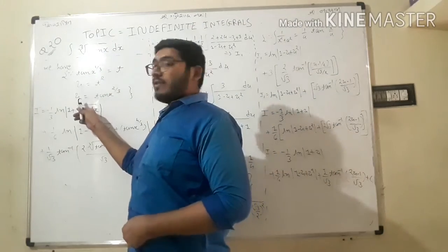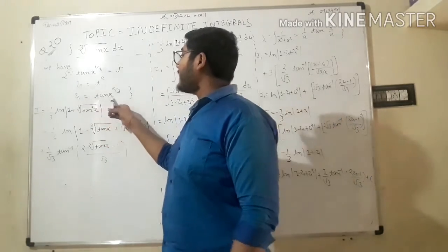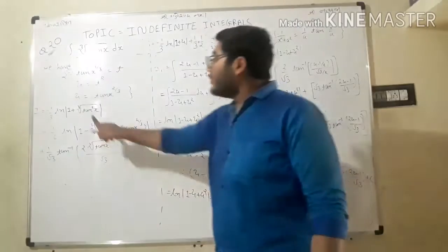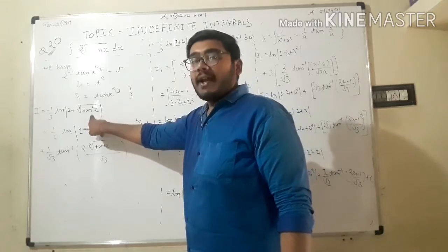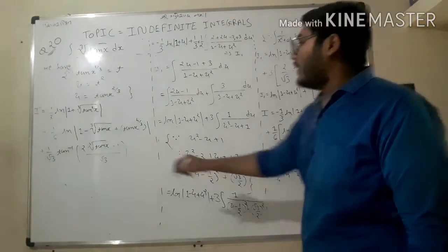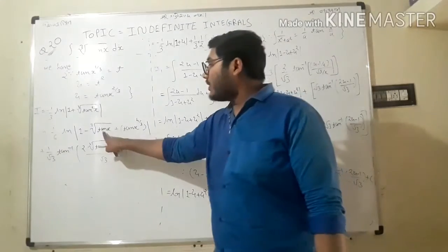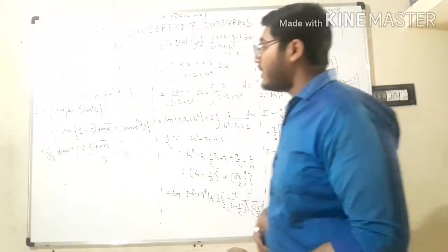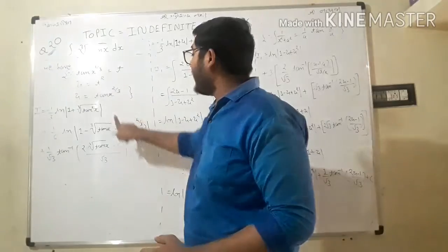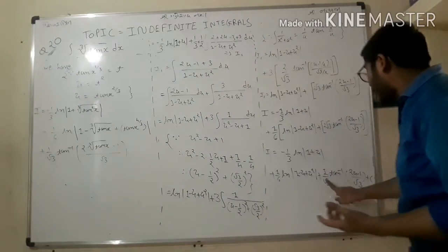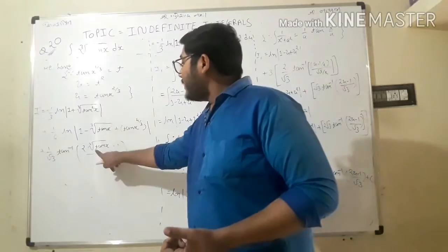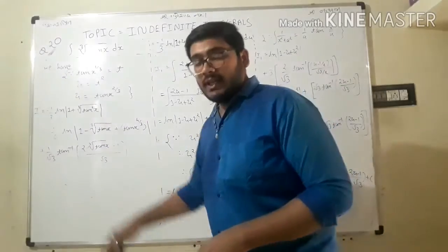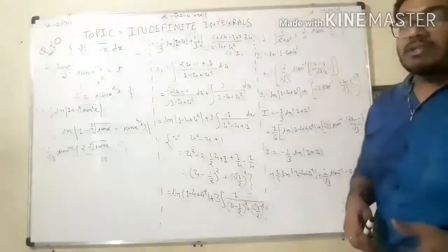Substituting u = tan(x)^(2/3) back: i = -1/3 · ln|1 + tan(x)^(2/3)| + 1/6 · ln|1 - tan(x)^(2/3) + tan(x)^(4/3)| + 1/3 · arctan((2·tan(x)^(2/3) - 1)/√3) + C. This is our required solution.